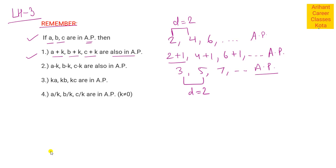तो यहां हम क्या देख रहे हैं — कि अगर किसी arithmetic progression में each term में किसी constant k को add कर दो, तो उसके बाद जो arithmetic progression बनेगी, वो arithmetic progression ही होगी। Similarly, a-k, b-k, c-k — अगर आप subtract भी कर रहे हो k को, तो भी जो sequence होगी वो arithmetic progression ही होगी।